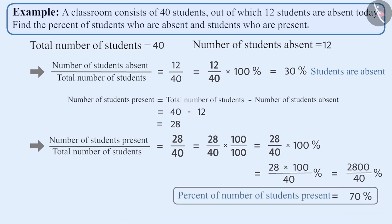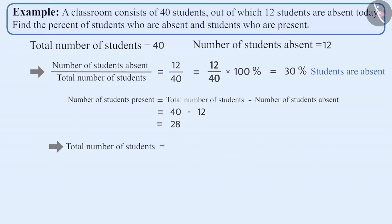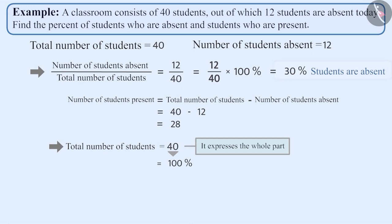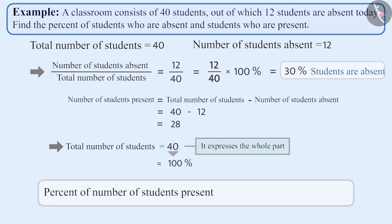We can find the percent of students present using another method. The total number of students in the classroom is 40. Since it expresses the total or whole part, we can consider it 100 percent. Since we have obtained the percent of students absent as 30 percent, the percent of students present equals 100 percent minus 30 percent, which equals 70 percent.